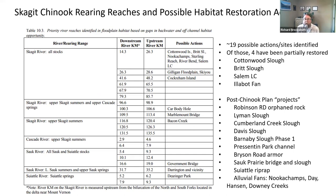This is table 10.3 in the Skagit Chinook recovery plan, showing the rearing reaches for each of the six stocks and the possible habitat restoration actions in the middle column. The table shows 14 identified actions, but there are actually some additional green triangles on the maps, so there are about 19 possible actions and sites identified in the recovery plan. Of those, four have been partially restored. After 18 years since the recovery plan was authored, we've gotten through four of those 19 possible sites that have been partially restored.